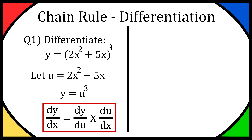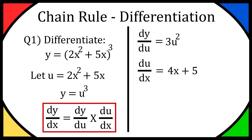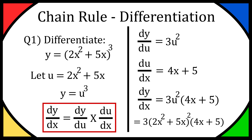The chain rule is that dy over dx is equal to dy over du times du over dx. So if we want to find dy over dx, we need to find dy over du and du over dx, and then multiply them together. So dy over du: y is equal to u cubed, so differentiating y with respect to u gives us 3u squared. For du over dx, u is equal to 2x squared plus 5x, so differentiating with respect to x gives 4x plus 5. So multiplying them together, we get 3u squared times 4x plus 5. Substituting u back in, we get 3 times (2x squared plus 5x) all squared times (4x plus 5).